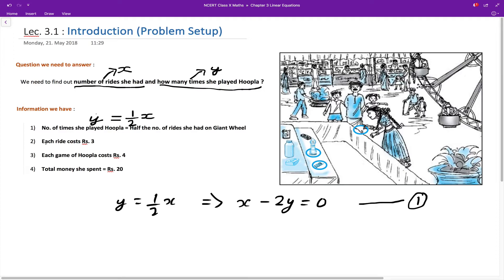Now let us use the other information. Each ride costs rupees 3, so if one ride costs rupees 3 and she had x number of rides, then the total cost for rides will be 3 times x—the number of rides she had multiplied by cost for one ride. Now, each game of hoopla cost rupees 4, so one game of hoopla cost rupees 4, and she played hoopla y number of times. So the total cost for hoopla would be 4y—the cost for one hoopla game multiplied by the number of hoopla games she played. So this is the amount spent on the rides and this is the total amount spent on the hoopla game, and this is the total amount spent.